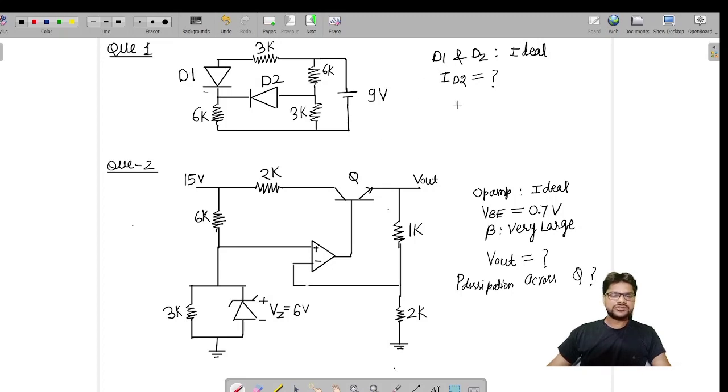The problem was we had to find out this diode current ID2, which is the current flowing in diode D2, and we were given that D1 and D2 are ideal, meaning that the cut-in voltage of D1 and D2 is 0V.